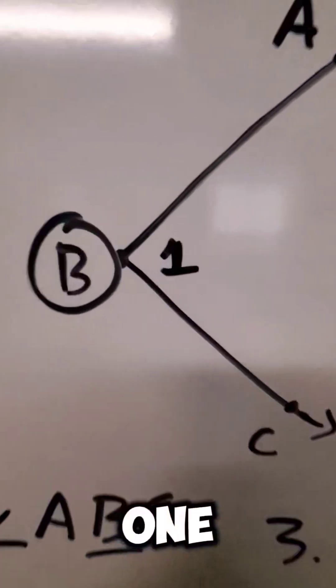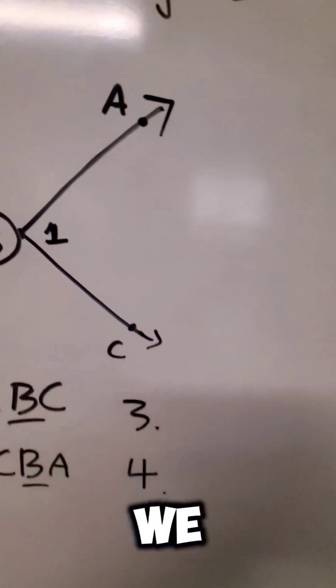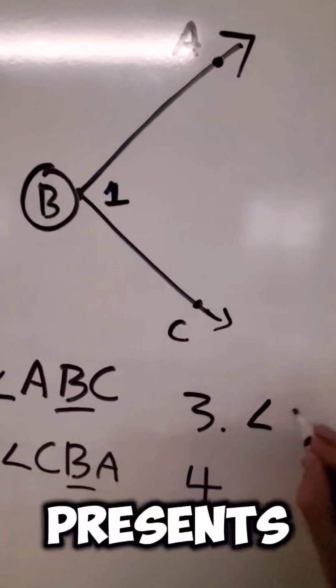Now look at this one right here. That one doesn't have a degree marking so we could also name this angle one whenever the opportunity presents itself.